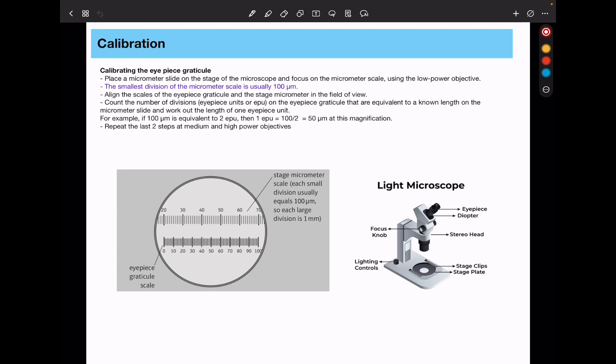So here the smallest subdivisions of the micrometer scale are going to be a hundred micrometers. So we're going to find out by aligning these. You have to make sure that these big ones are aligned with some of these ones here. So we align the scales of the eyepiece graticule and the stage micrometer in the field of view. This is the field of view, the circular thing that is your field of view. You will count how many subdivisions, these are going to be the eyepiece units, on the eyepiece graticule that are equivalent to a known length on the micrometer slide. And then we can work out the length of one eyepiece unit.